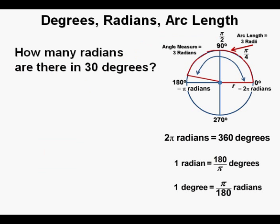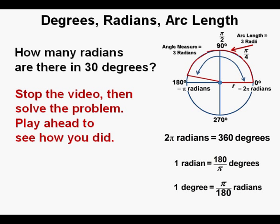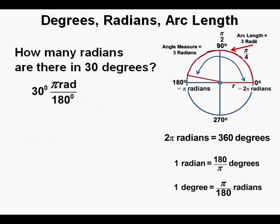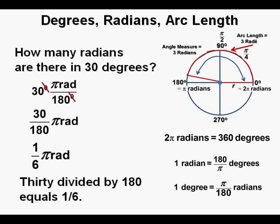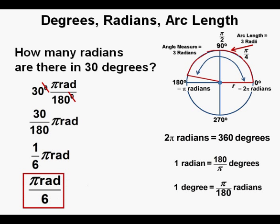We mark pi over 2 radians above the 90-degree position on our circle. Now, how many radians are in 30 degrees? We have 30 degrees times pi radians per 180 degrees — degrees cancel. This gives us 30 over 180 times pi radians. 30 divided by 180 simplifies to one-sixth, so by convention the answer is pi over 6 radians, abbreviated as pi/6 rad.